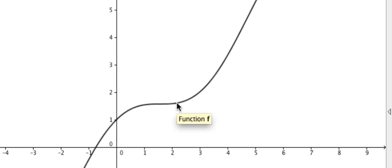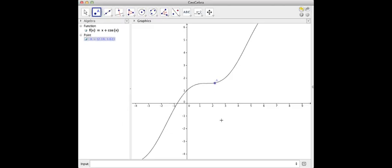Notice that when you are actually on the graph, the graph will be highlighted and you'll see a text label. Make sure that you are putting the point actually on the graph, otherwise it will just be a free point in space that has no relation to the graph.